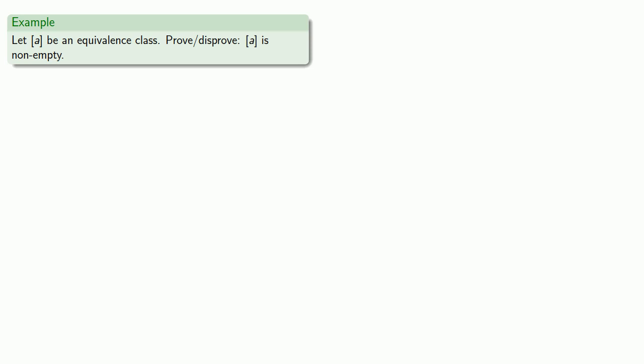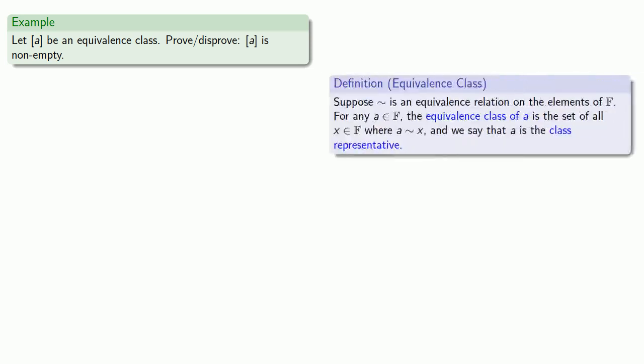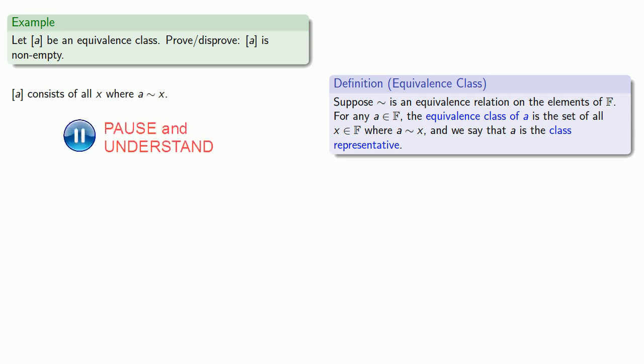Suppose we have an equivalence class. Let's prove or disprove that our equivalence class is not empty. Definitions are the whole of mathematics — all else is commentary. Since we're talking about equivalence classes, in order for there to be an equivalence class there has to be some equivalence relation; we'll call it squiggle. So our equivalence class consists of all x where A squiggle x.